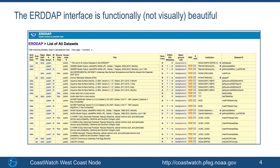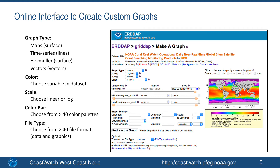To download a data set, click the data link to the left of the data set title. To create a graph of the data, click on the graph column to the left of the data set title, and that will bring up the online interface to create custom graphs. Data can be shown as maps, time series, and Hovmöller diagrams, which is a hybrid map with latitude and longitude on one axis and time on the other, to show both temporal and spatial variability. I'll show an example of one of these later in the presentation.